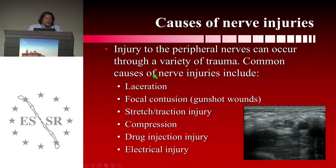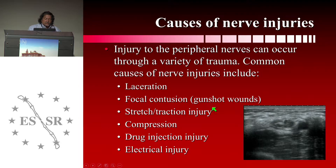The injury of the peripheral nerves can occur through a variety of trauma. Common causes of nerve injury include laceration, a focal contusion — for example with gunshot wounds — stretch or traction injury, compression, drug injection injury, and electrical injury.